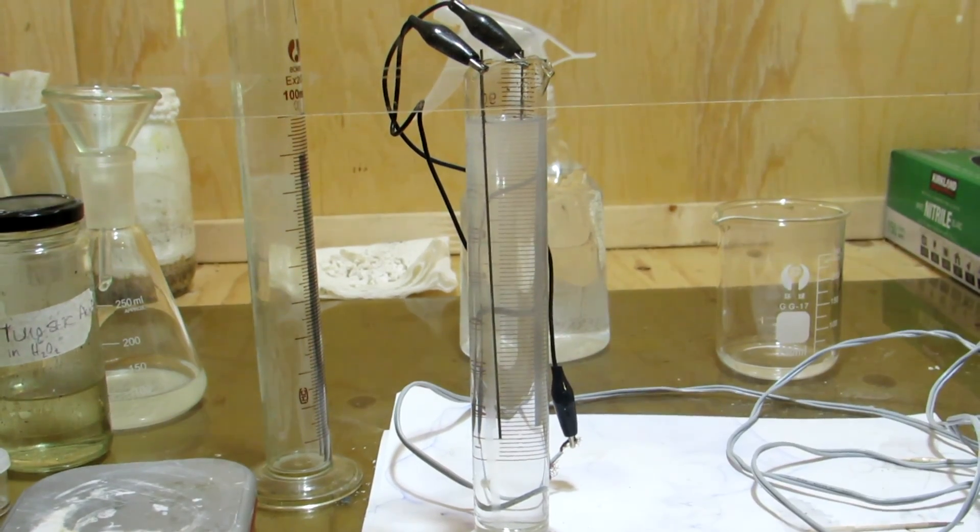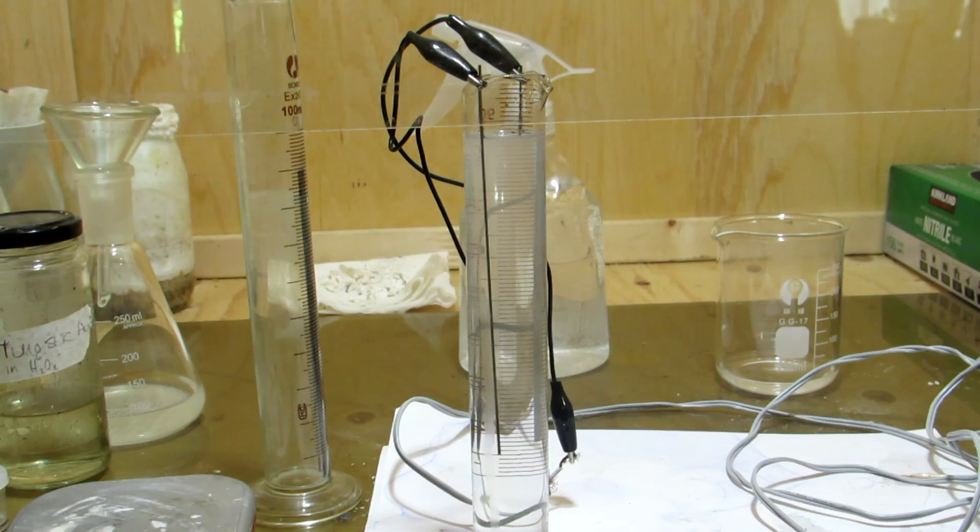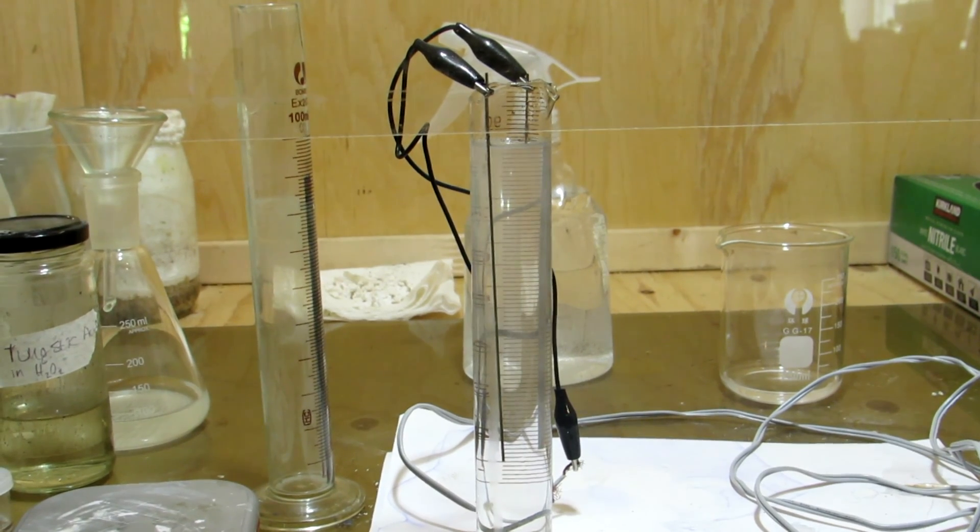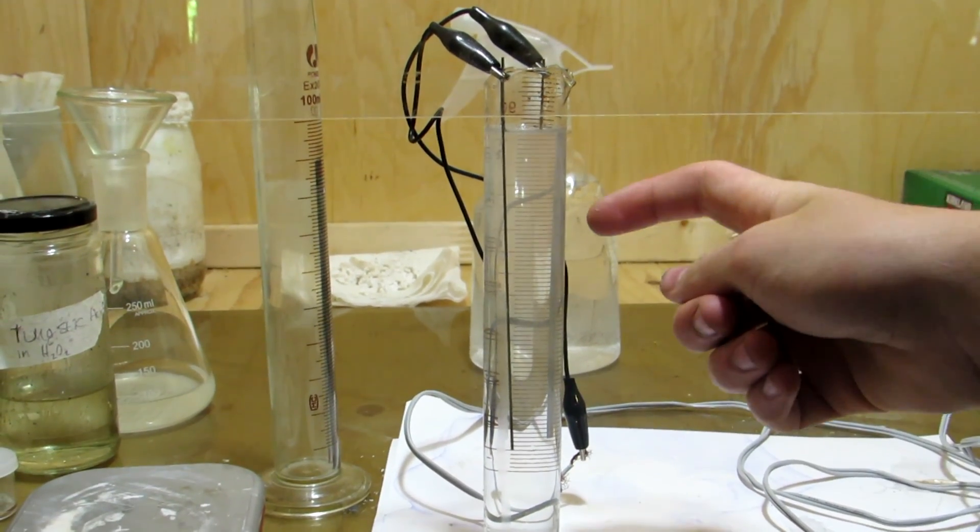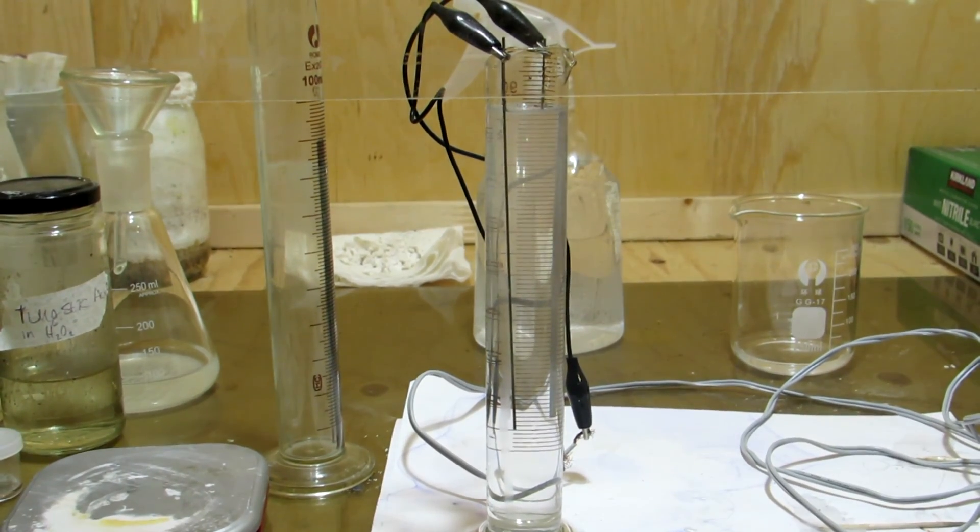To finish processing the rest of the rods however, we will use an electrochemical method to dissolve the tungsten as the hydrogen peroxide is too inefficient. To set up the apparatus, we can first use two alligator clips to attach two tungsten electrodes to the edges of the graduated cylinder.